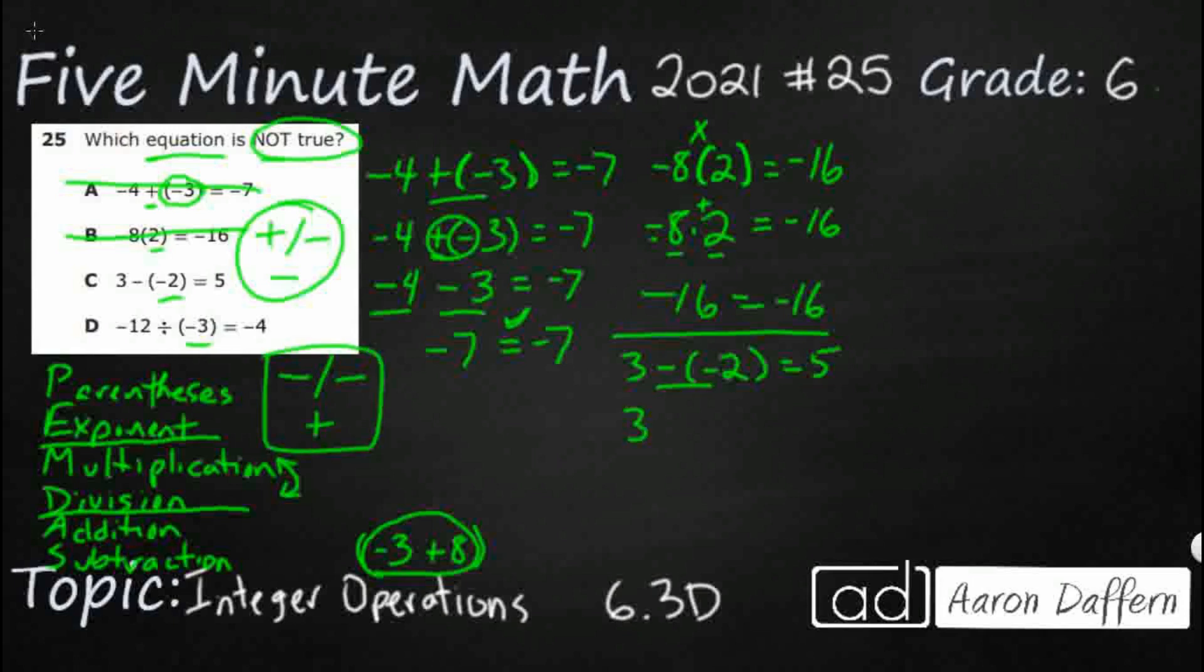So 3 turns into a positive 2, which equals 5. Yeah, 5 and 5. So that works. So let's hope it's D.